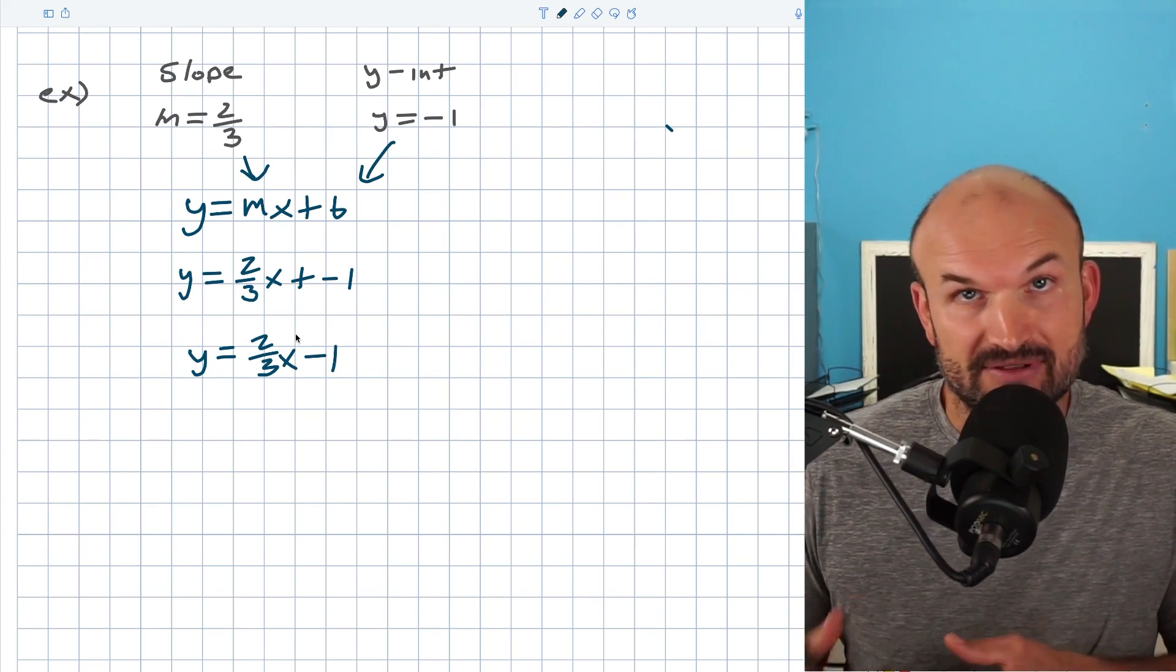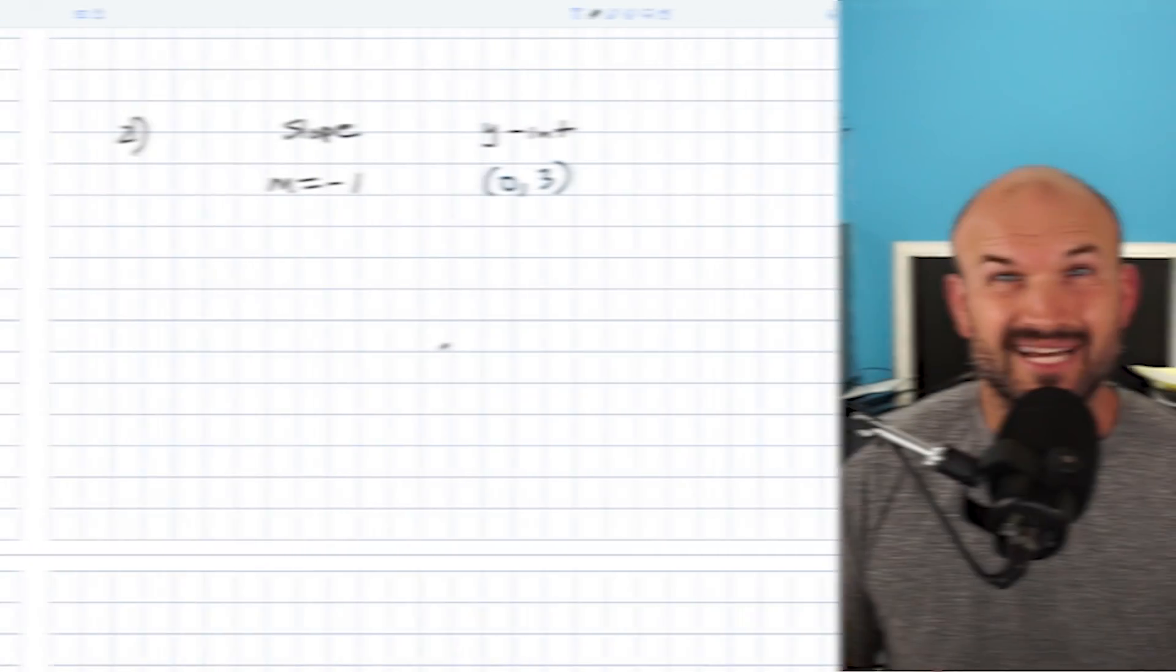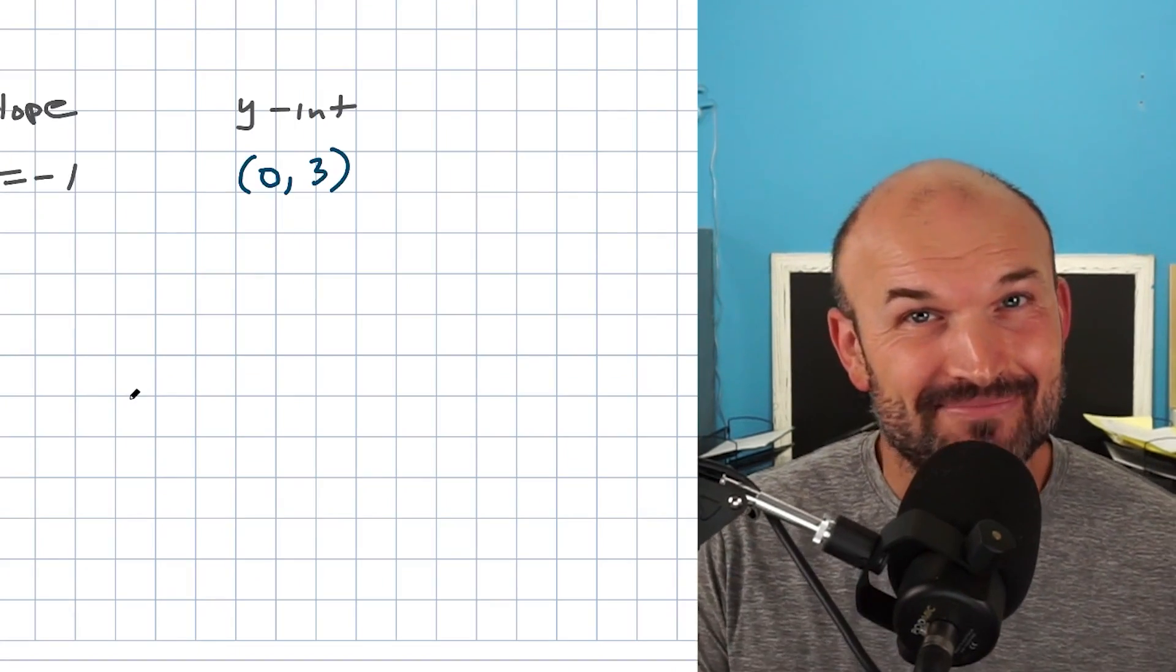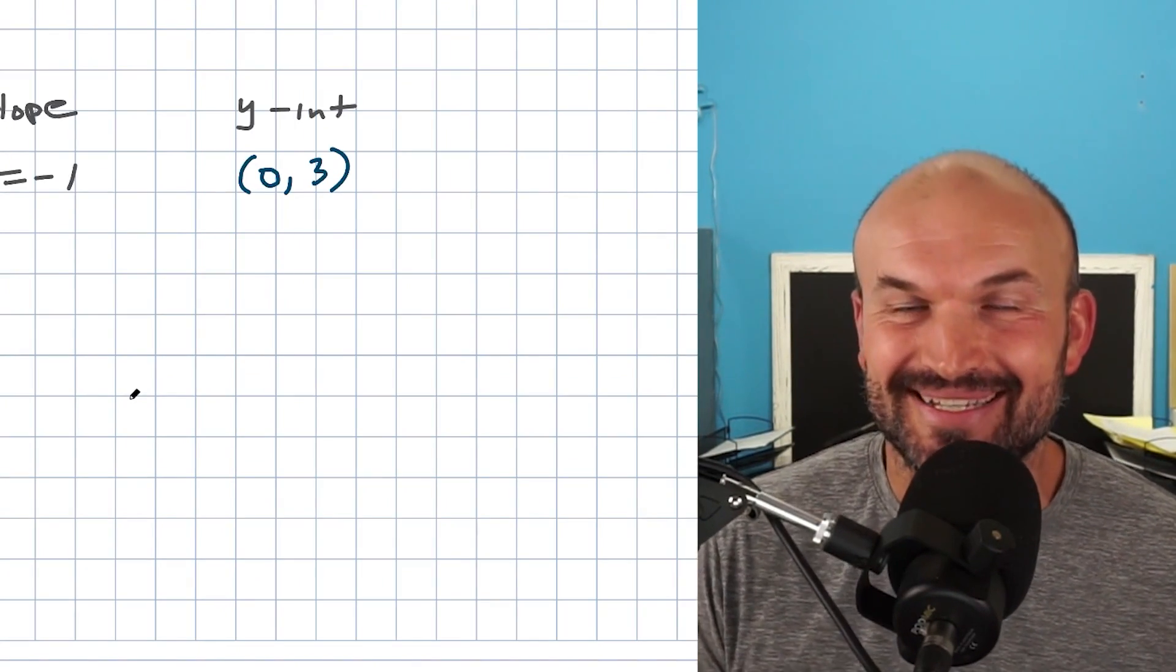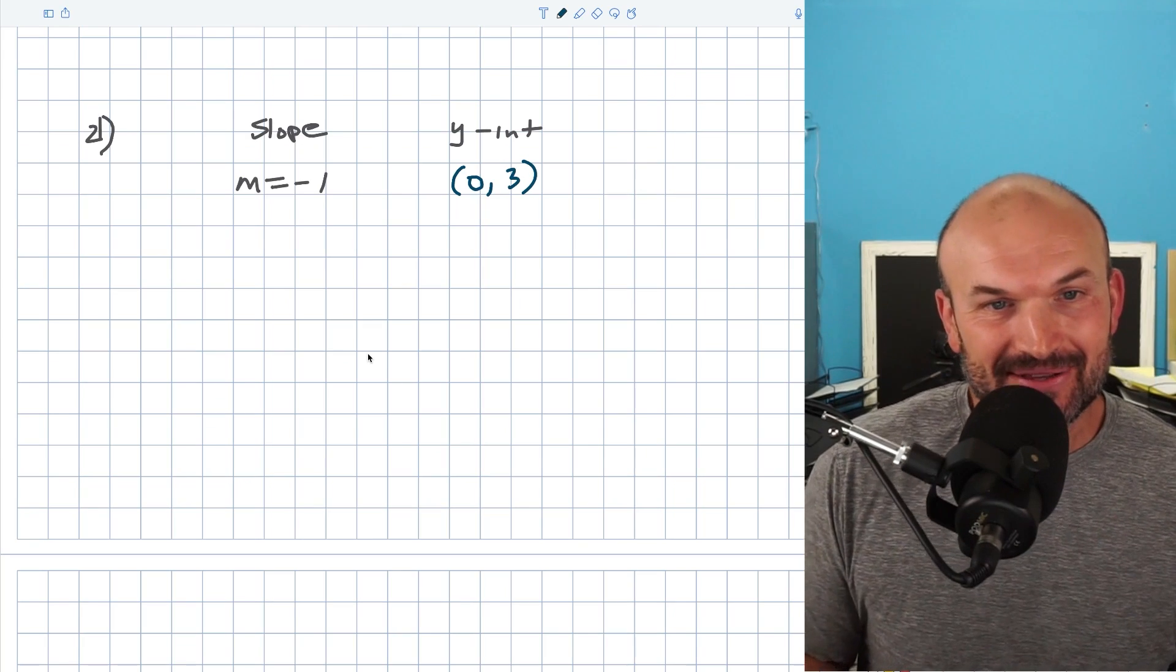We always like to write the slope times the variable in front of the constant. And you might be asking yourself now, is that it? That's all you need to know? Yes, but stay with me. There are going to be some tricky examples that I'm about to get to. So let's take a look at the next one.